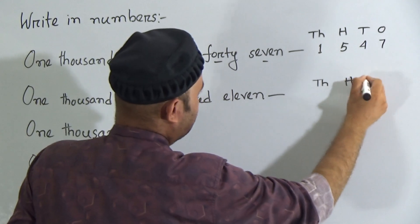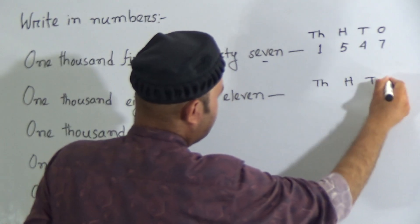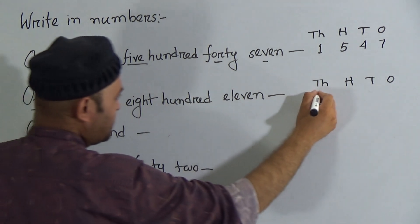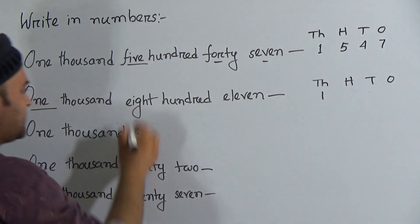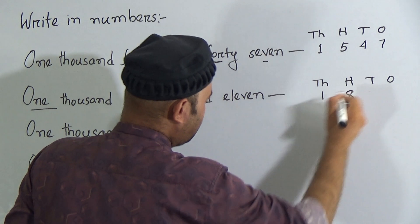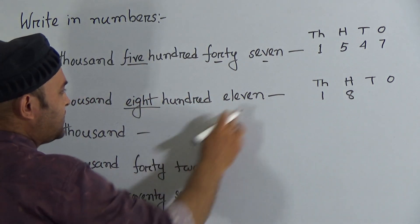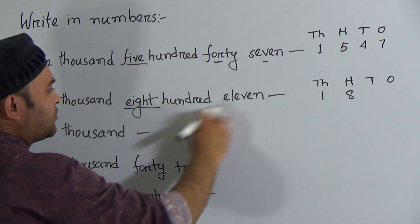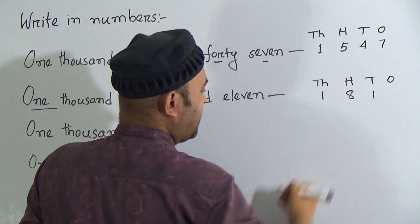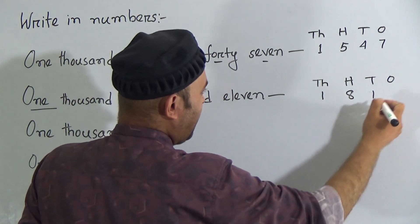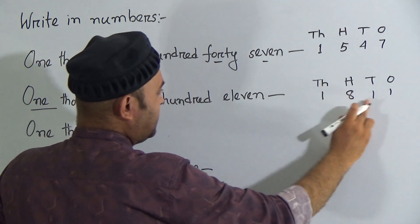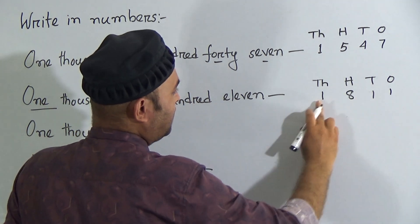Next one: one thousand eight hundred eleven. Here we have thousands, hundreds, tens, and ones. One thousand — write one in the thousands place. Eight hundred — write eight in the hundreds place. Eleven — write one in the tens place and one in the ones place.